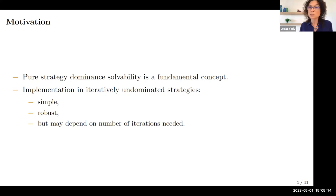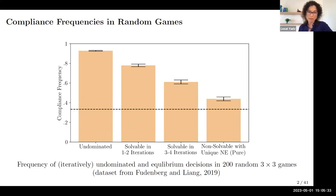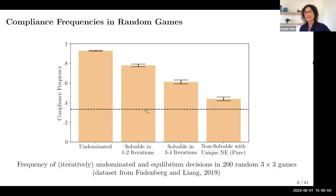Nonetheless, the number of iterations required may be large. Usually when we think about dominance solvability we don't restrict the number of iterations required to reach the unique Nash equilibrium. This might be an issue because we know from a wide array of experimental work that going through multiple iterations is difficult. Using data generously provided by Drew Fudenberg and Annie Liang, who ran 200 random three-by-three games, I'll show you compliance frequency as a function of game complexity.